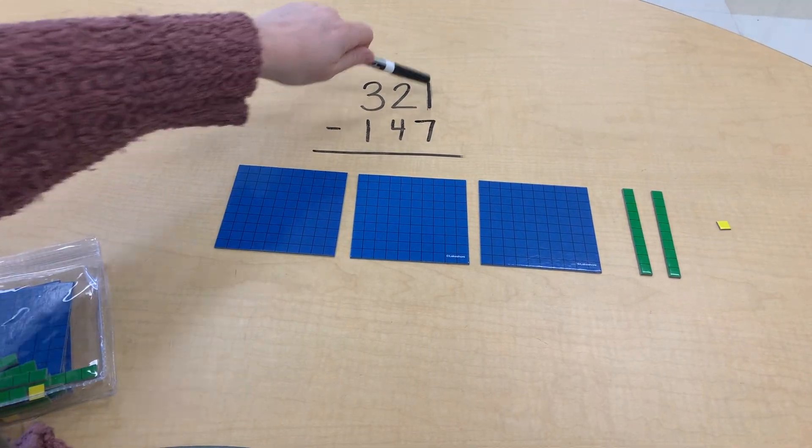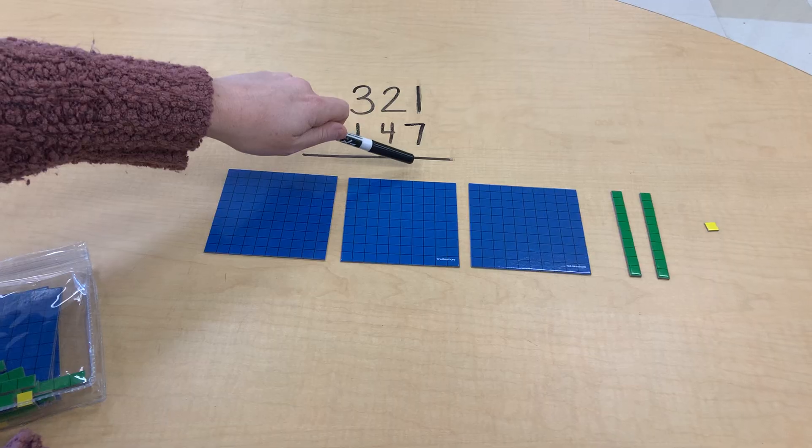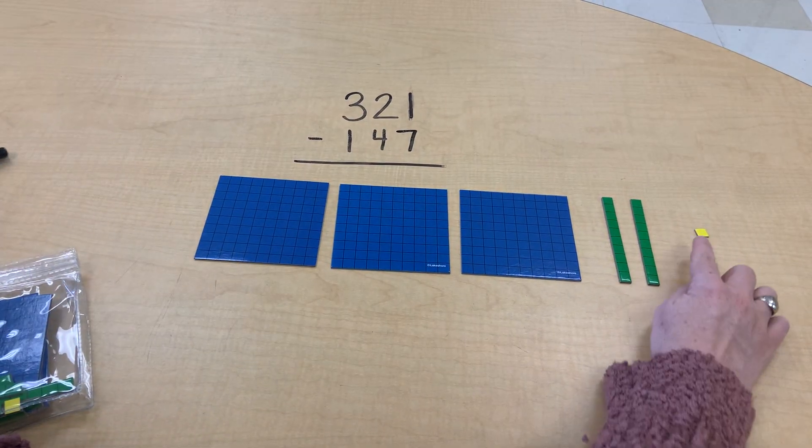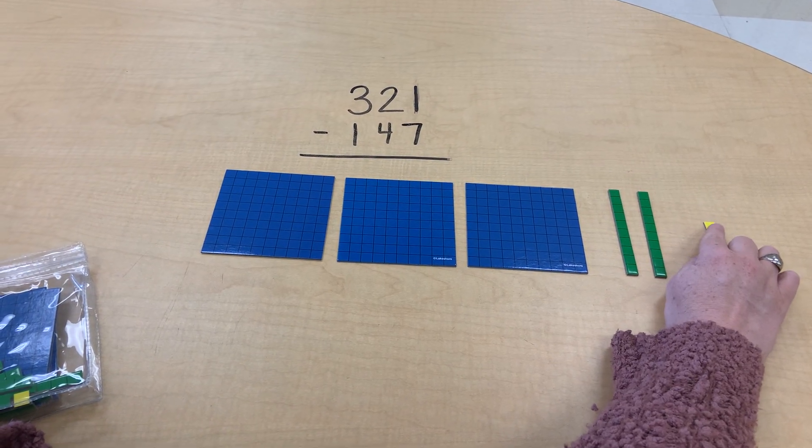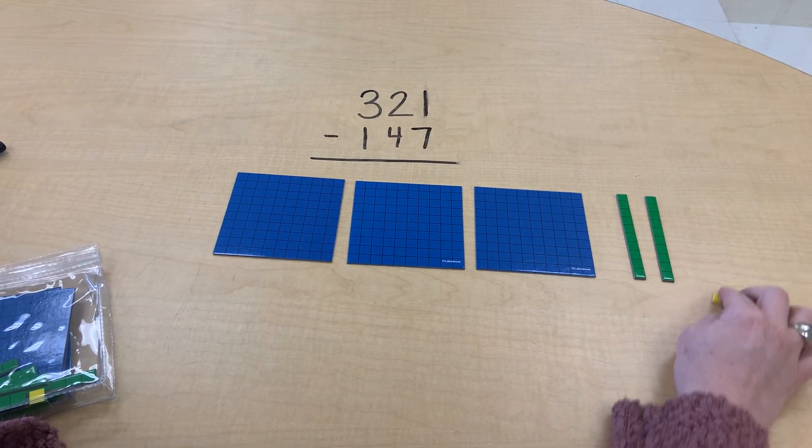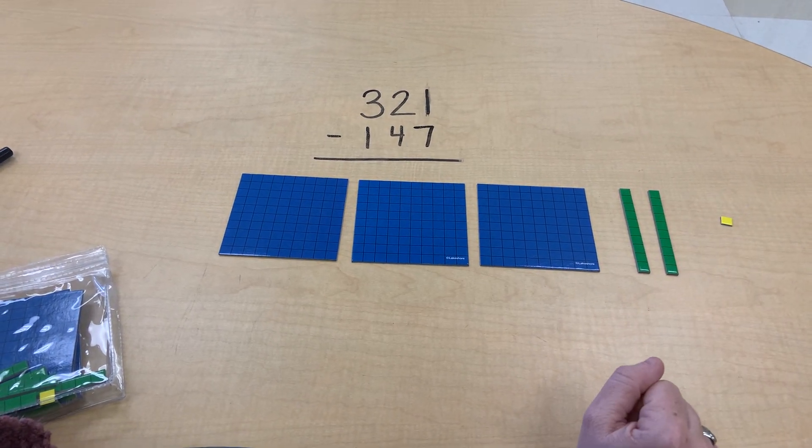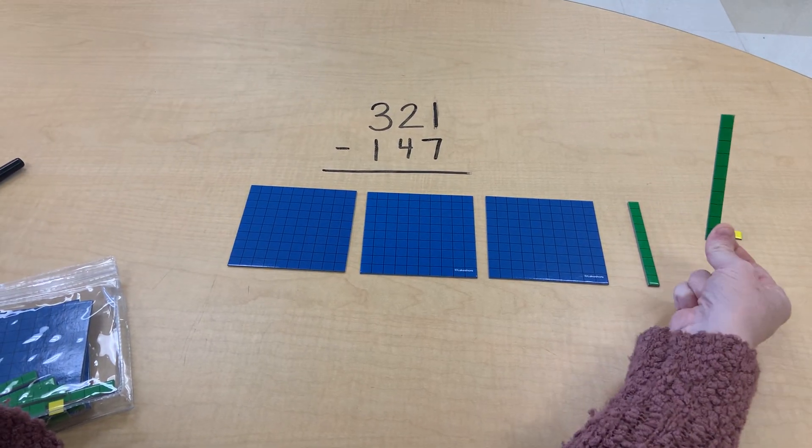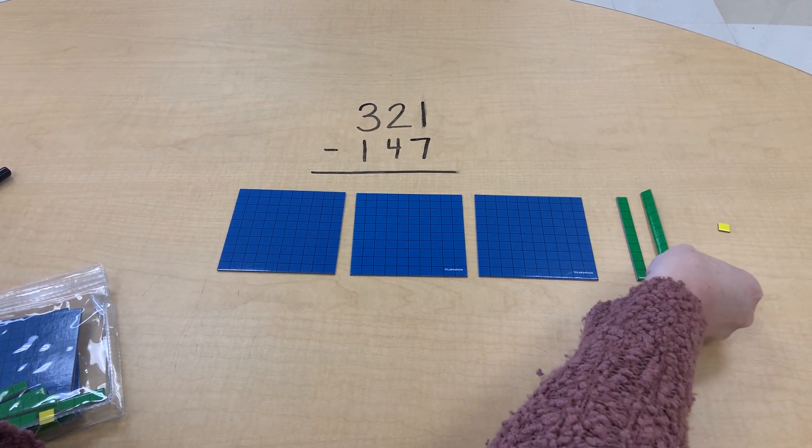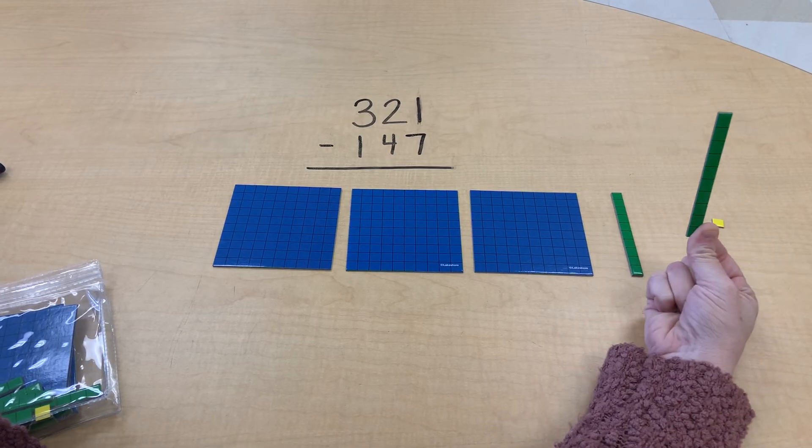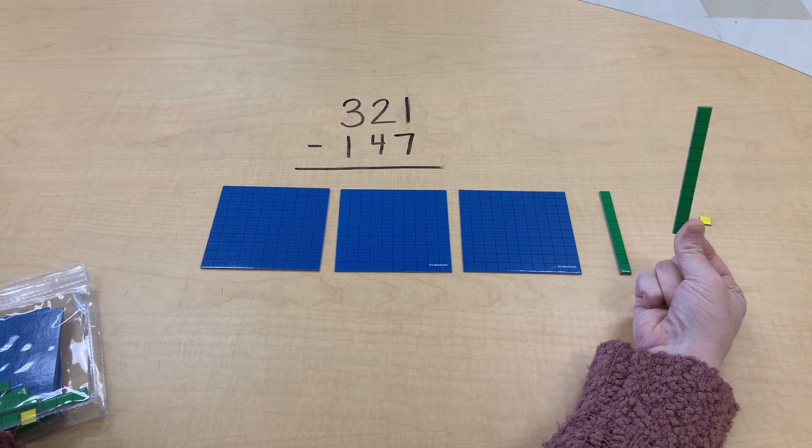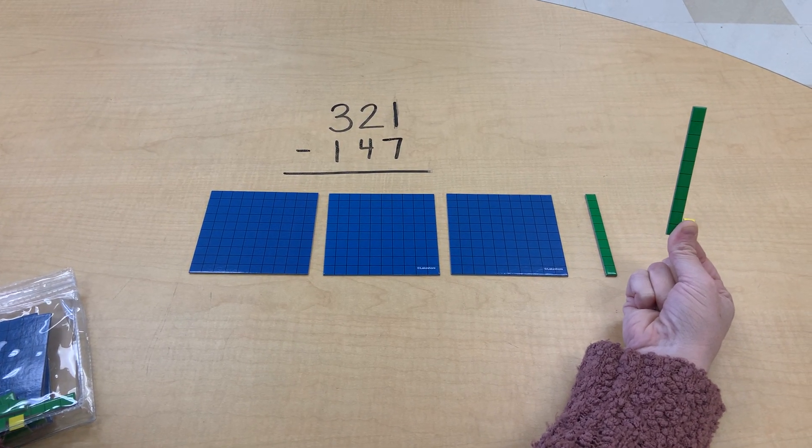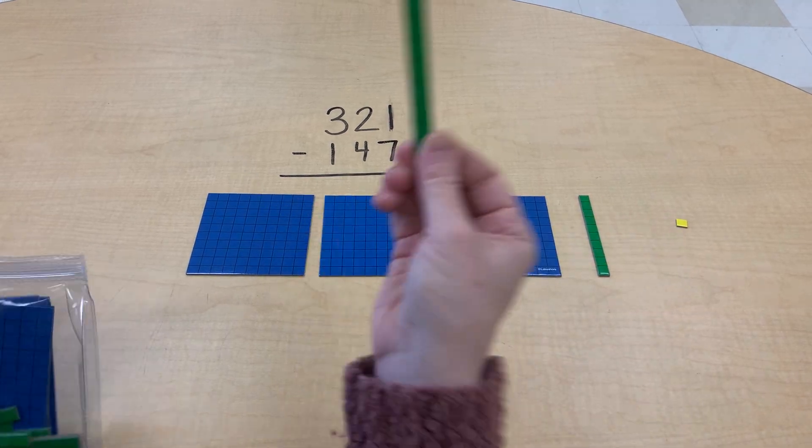First, we're going to start with the ones, which we would do if we were subtracting or adding. We always start in the ones place. So I have one and I cannot take away seven because I do not have seven ones here, but I can regroup. I can regroup from my tens place. I have two tens. I can break this ten up into ten ones. So that is exactly what I'm going to do.